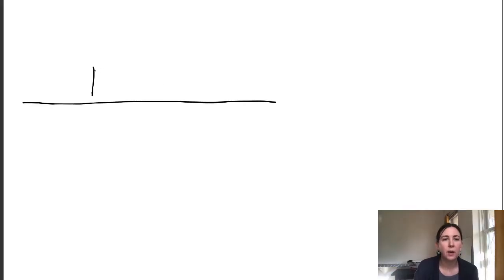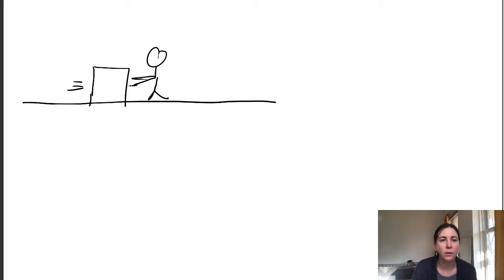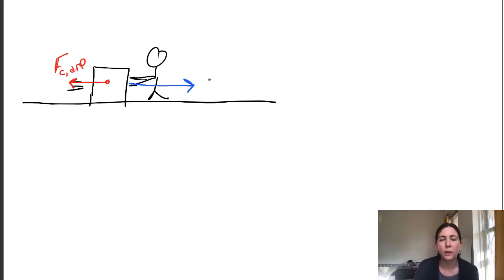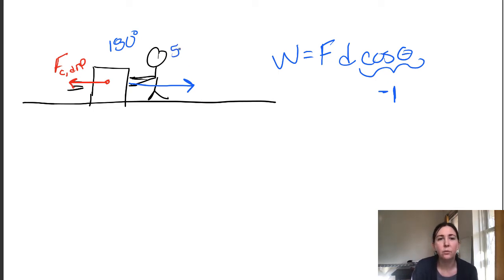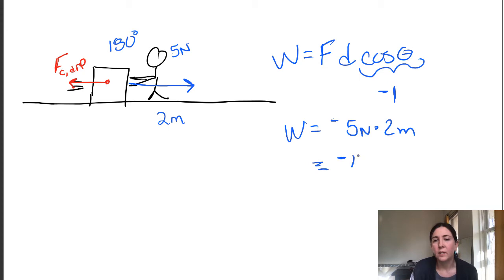Instead of a book, let's think about a heavy crate sliding across the room. I'm going to apply a force to try to stop the crate. My force on the crate goes opposite to the displacement of the crate, so the angle between these two is 180 degrees. Cosine of 180 is negative one. If I apply a force of 5 newtons over a distance of 2 meters, the work I do would be negative 10 joules.